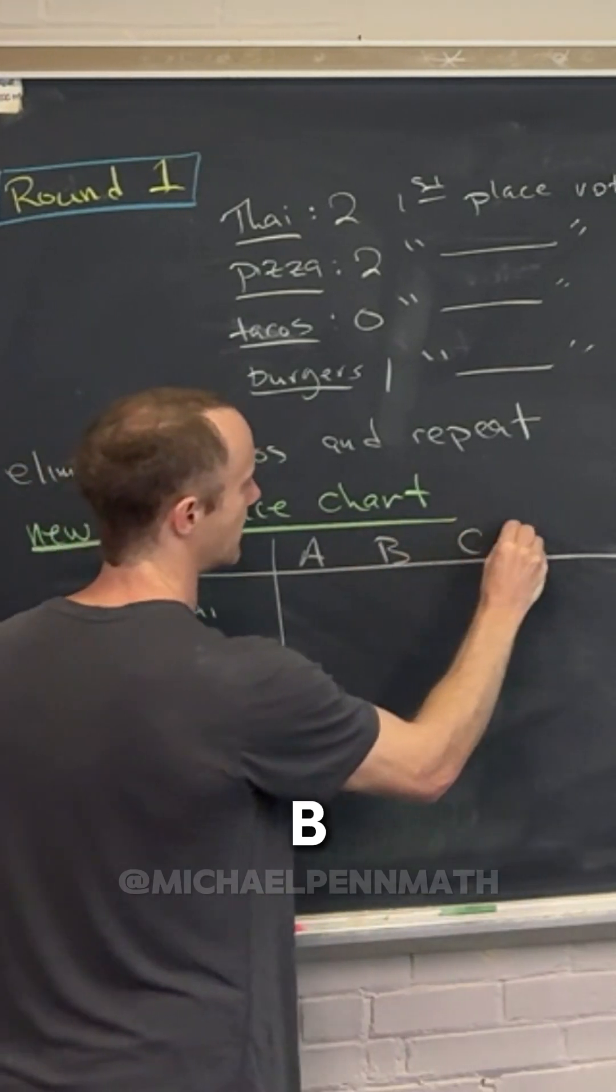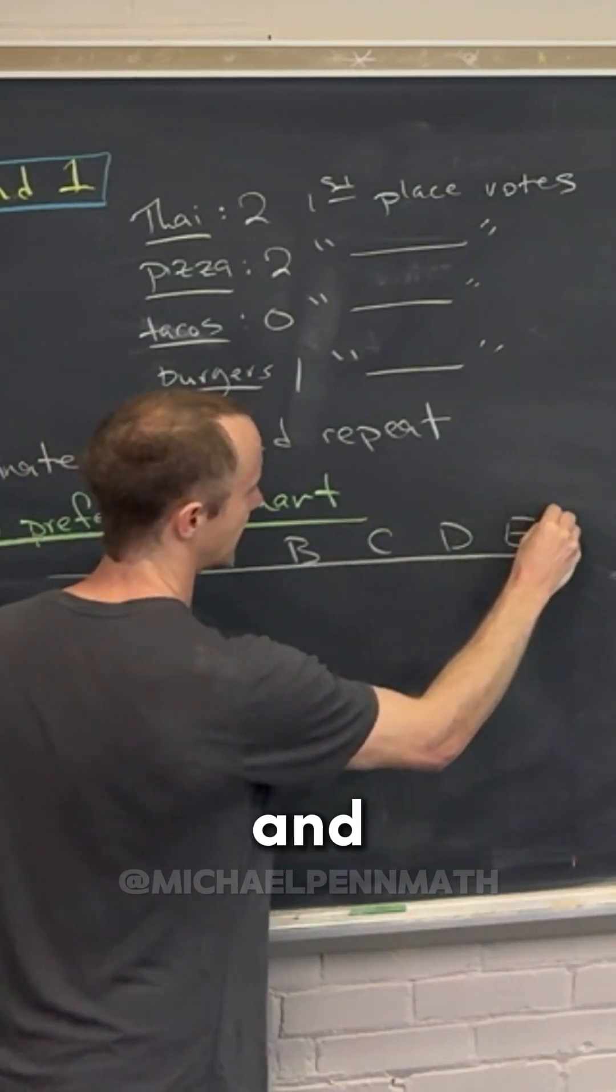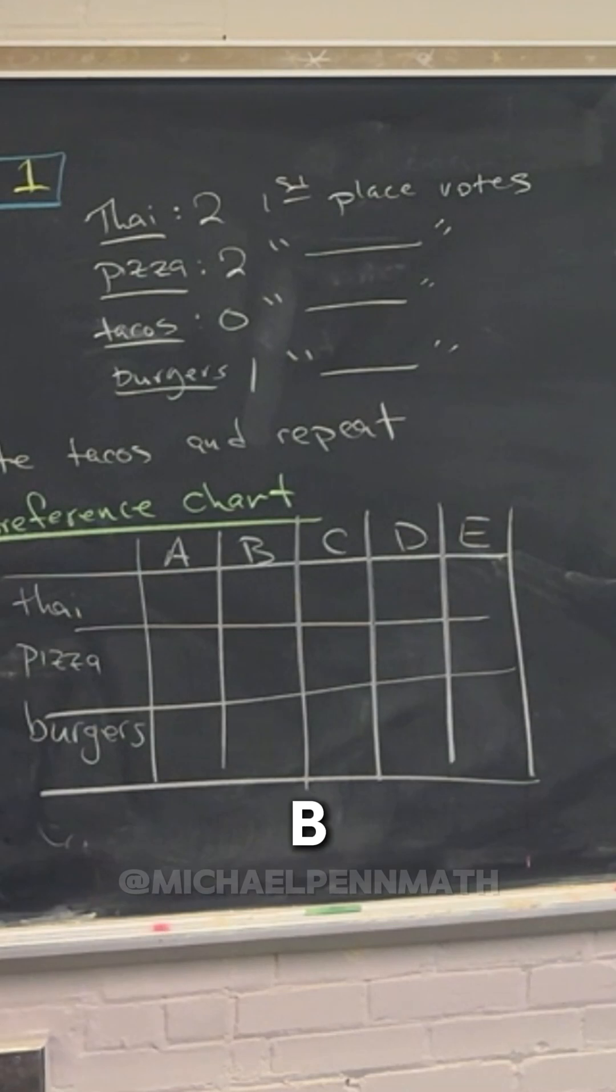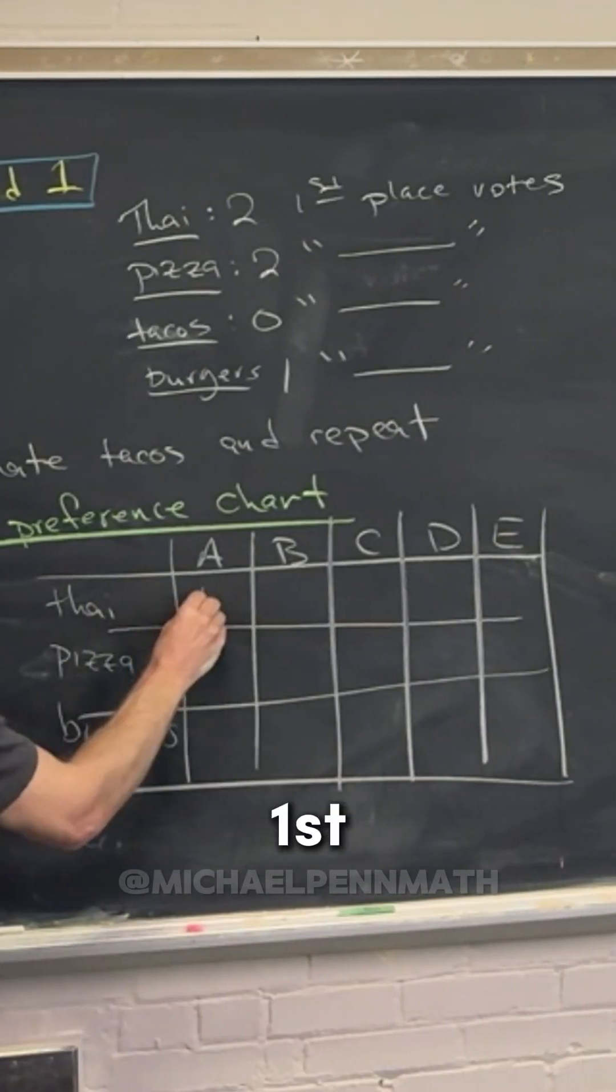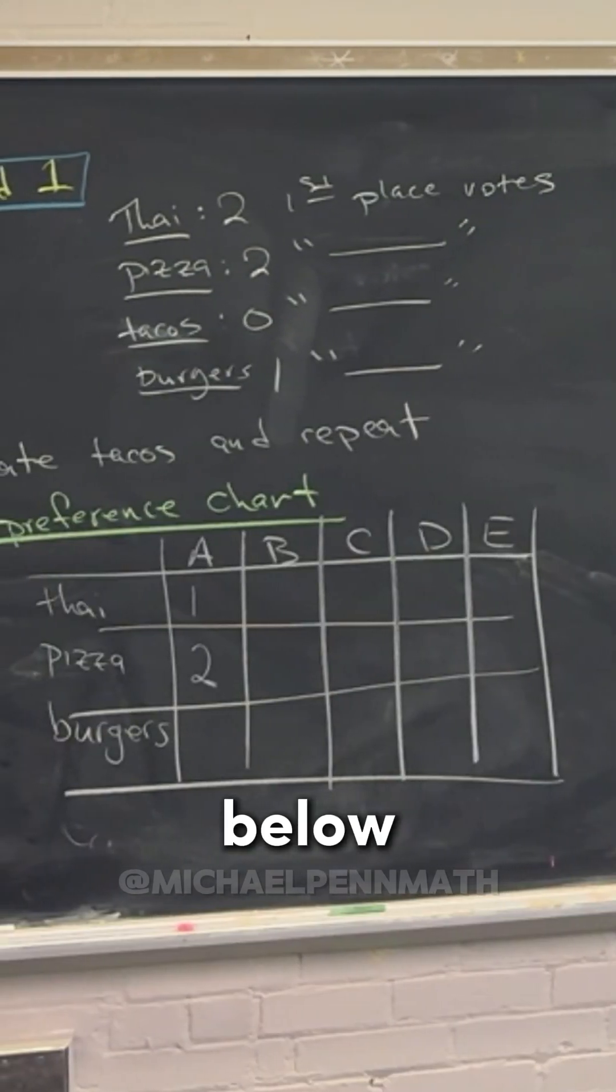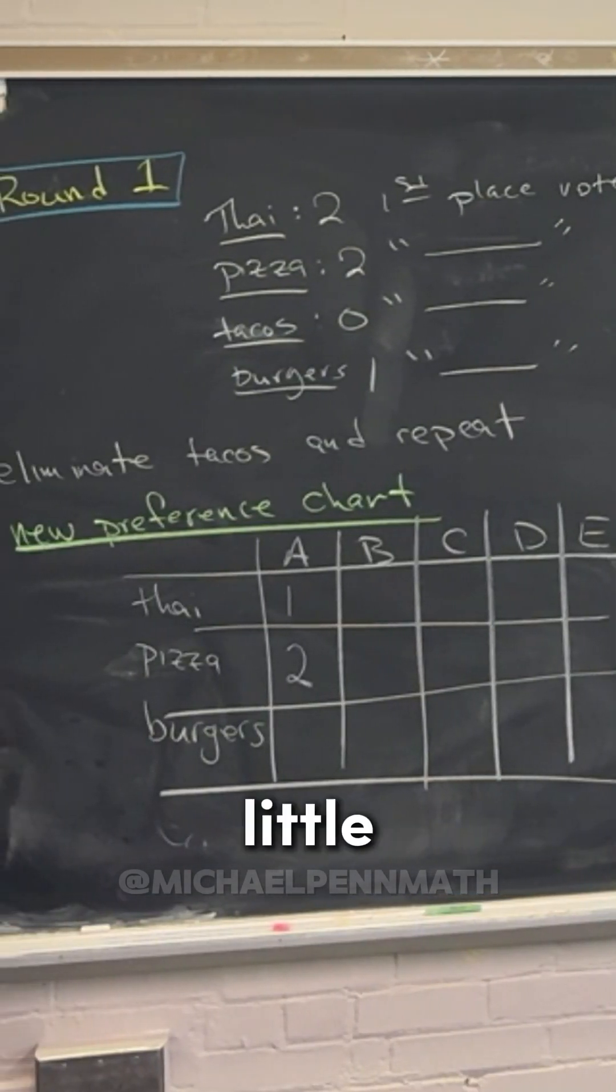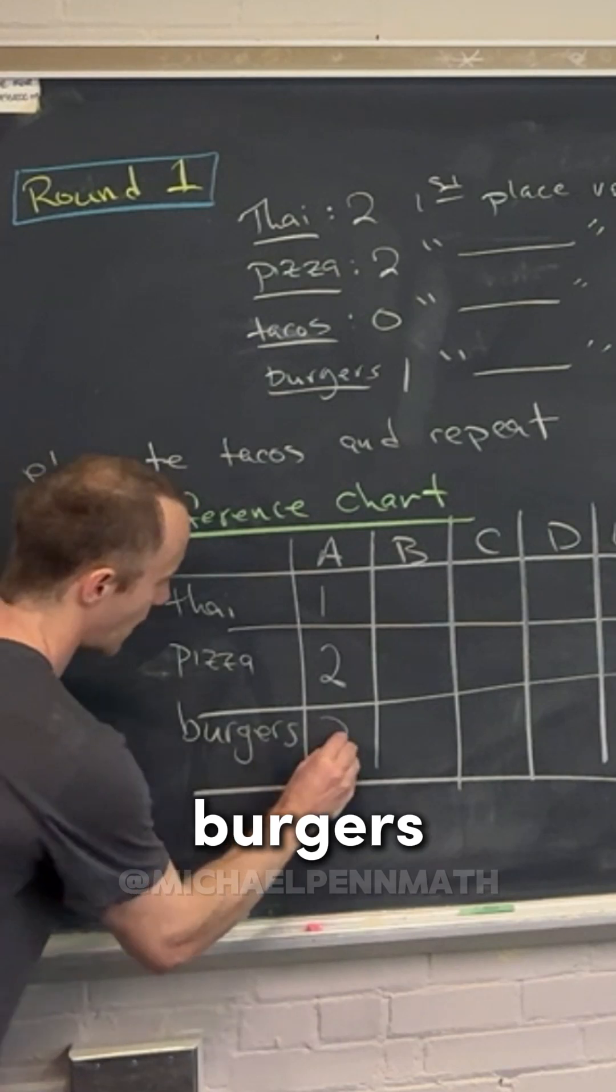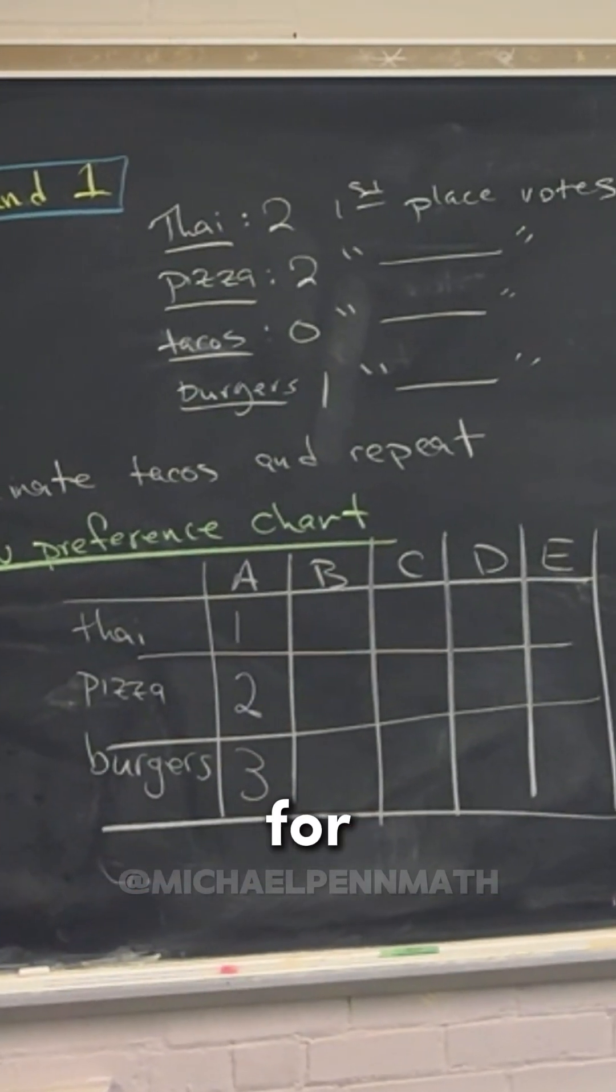And we've got people A, B, C, D, and E. So what would the preferences of person A be now? So they still rank Thai first place and pizza second place. If you've eliminated something, everything below it in your preference rises up a little bit, right? So now burgers are preferred third place for person A.